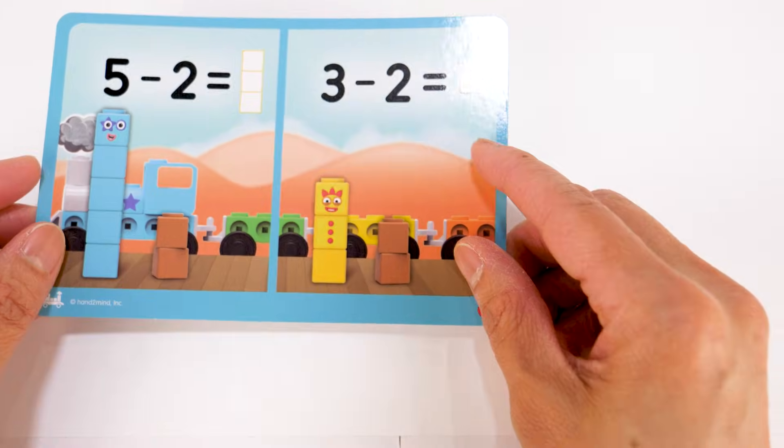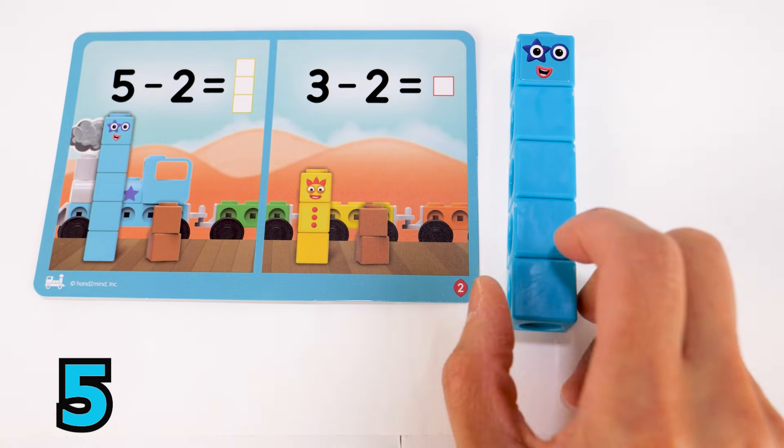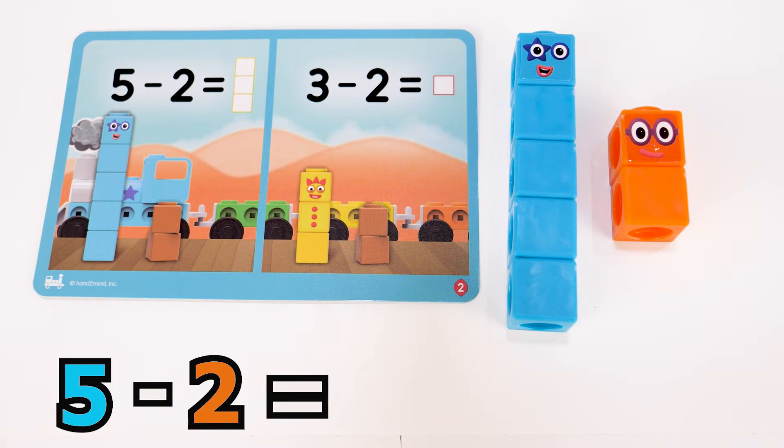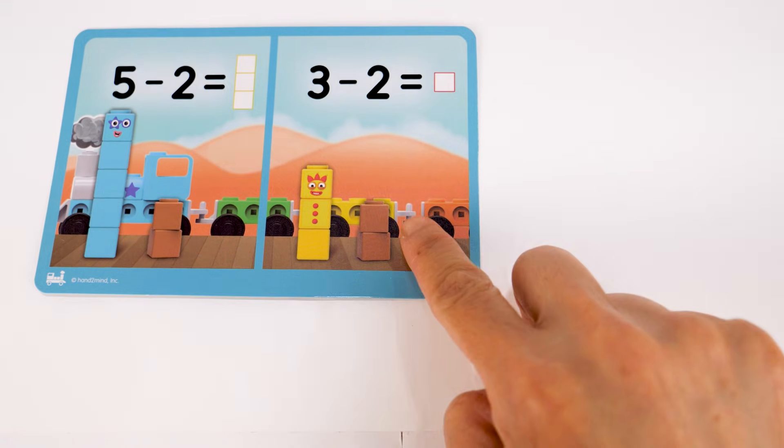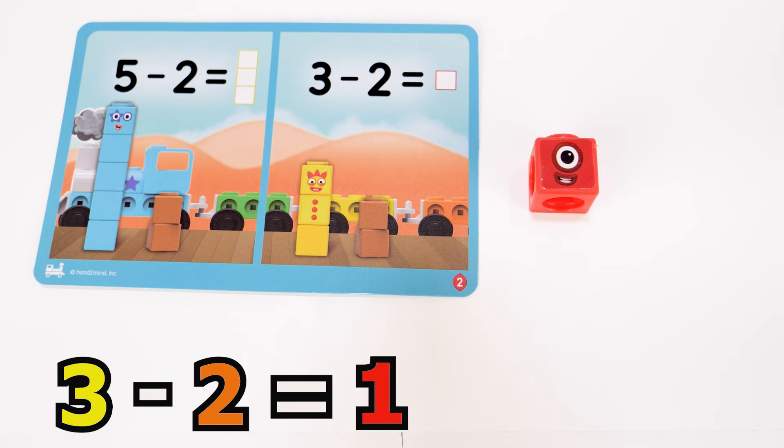How about we try some subtractions? Let's start with this one. Five minus two equals three. Next, we have three minus two equals one.